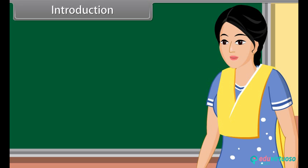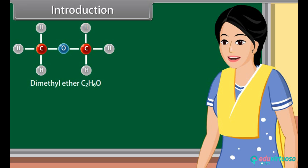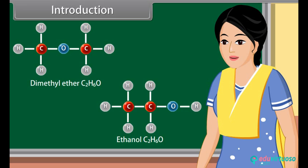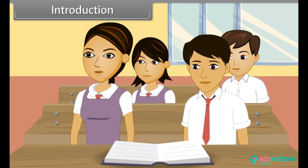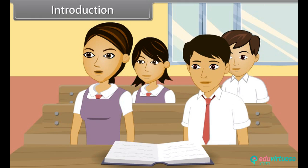The examples of isomers are dimethyl ether and ethanol. They have the same molecular formula but different configuration. Reaction mechanism is a sequence of steps during which chemical reactions occur.